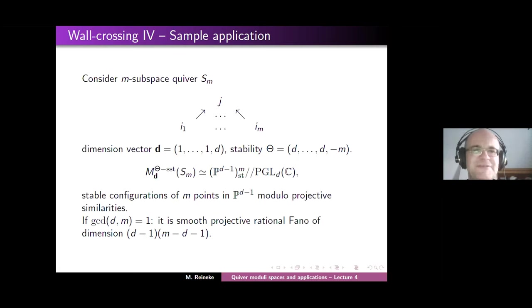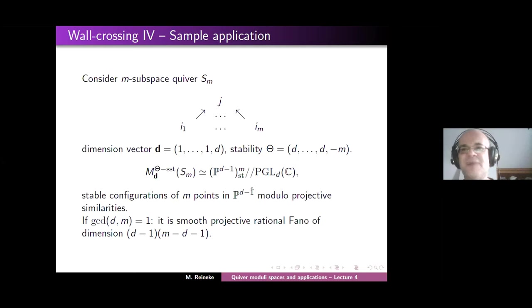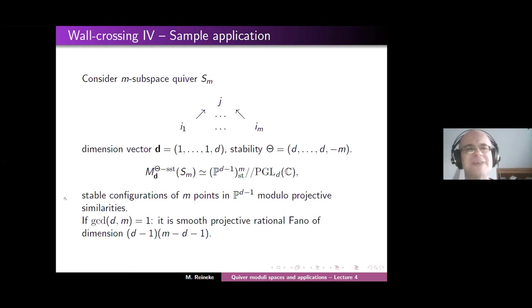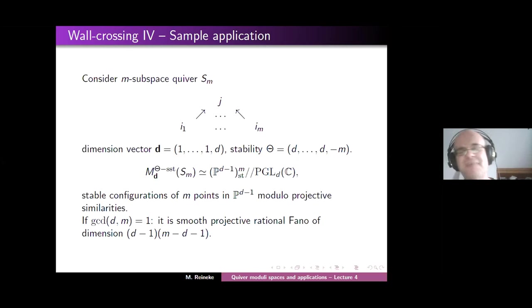This series of moduli spaces was known long before quiver moduli spaces. In fact, these moduli spaces of point configurations in projective space are the first example of Mumford's geometric invariant theory — if you look at Mumford's book. When he finishes the general theory, his first example of GIT quotients is point configurations in projective space. This class of varieties dates back to the 1960s. The surprising thing is that only now — with all this wall-crossing mechanism in motivic quantum tori — can one realize these innocent configuration spaces encode very non-trivial Gromov-Witten invariants.